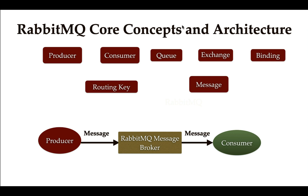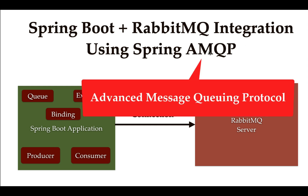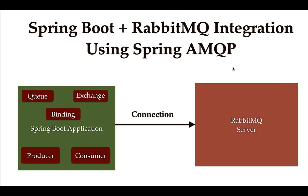Next, we will learn how to integrate RabbitMQ in a Spring Boot project using the Spring AMQP library. Spring provides the Spring AMQP library which we can use to integrate RabbitMQ in a Spring Boot project. AMQP stands for Advanced Message Queuing Protocol, and RabbitMQ uses this protocol for messaging.